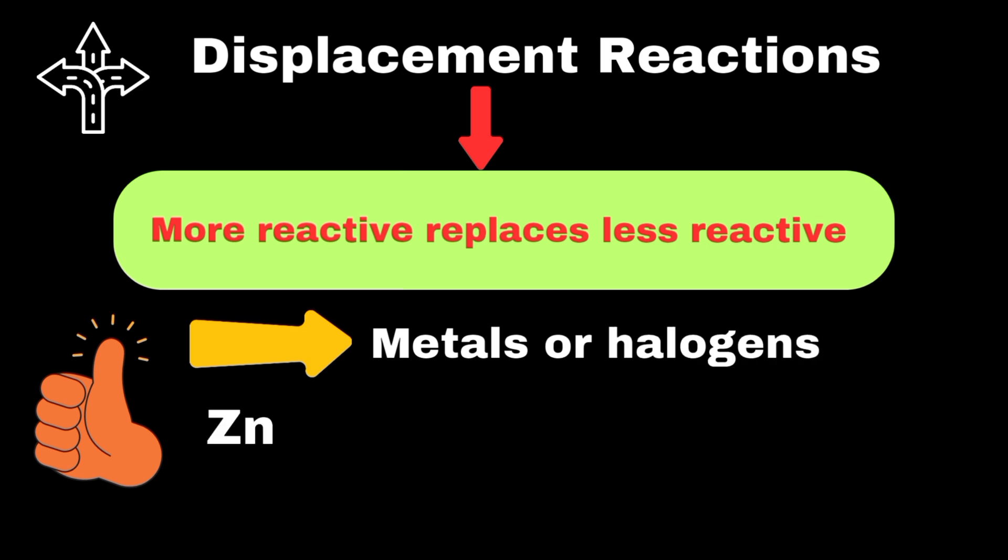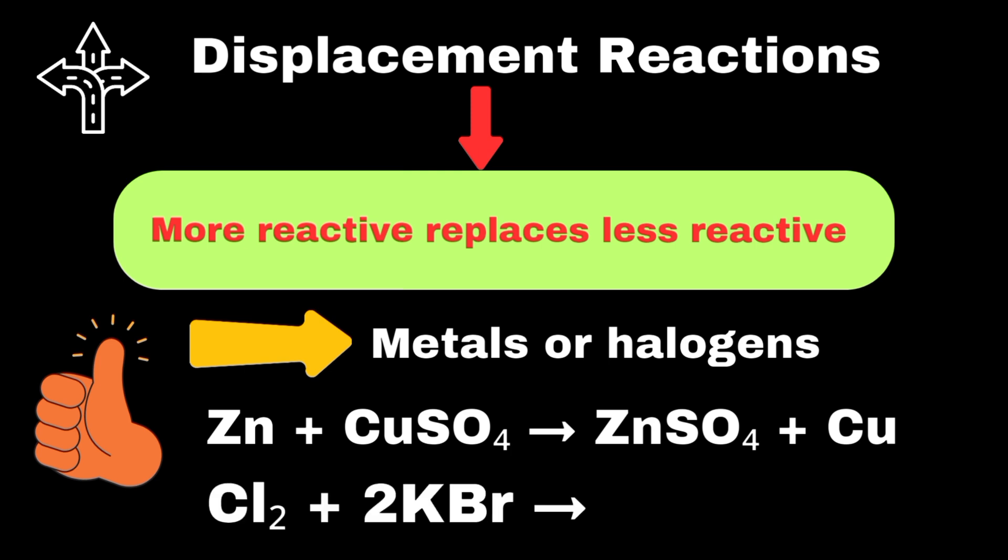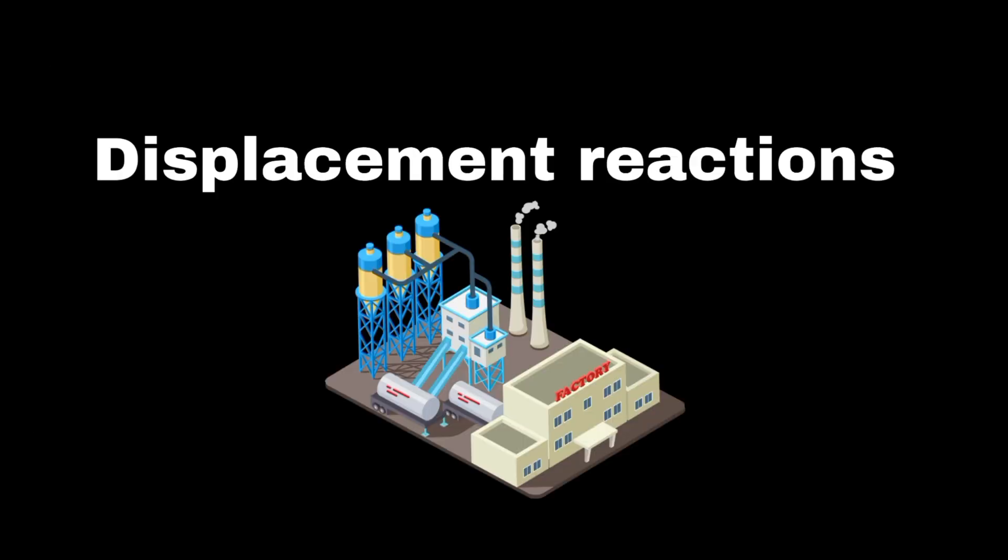For instance, when zinc is placed in copper sulfate solution, zinc displaces copper to form zinc sulfate and copper metal. Another example is when chlorine gas reacts with potassium bromide solution, forming potassium chloride and bromide. Displacement reactions are widely used in industries.